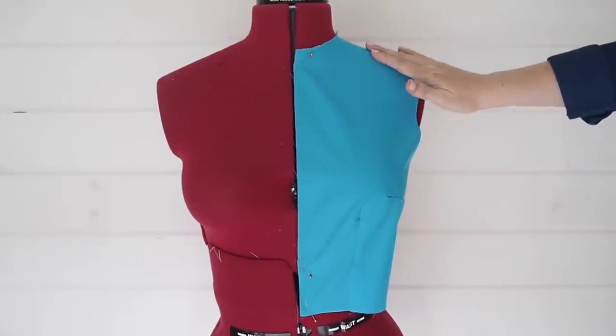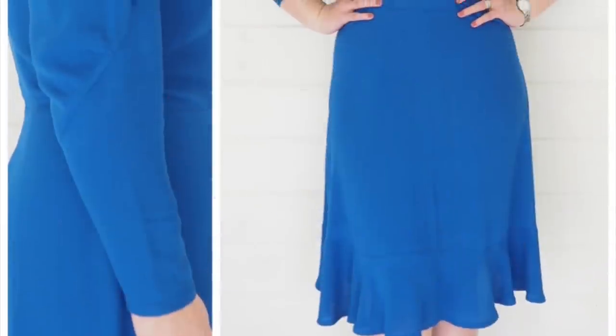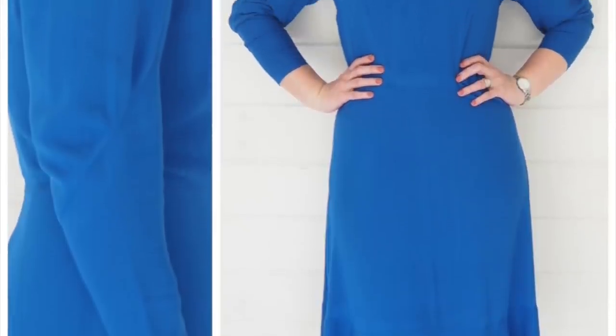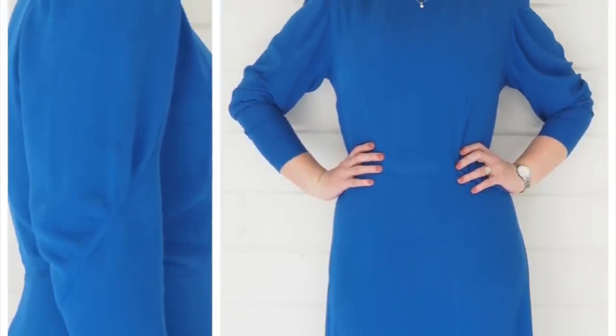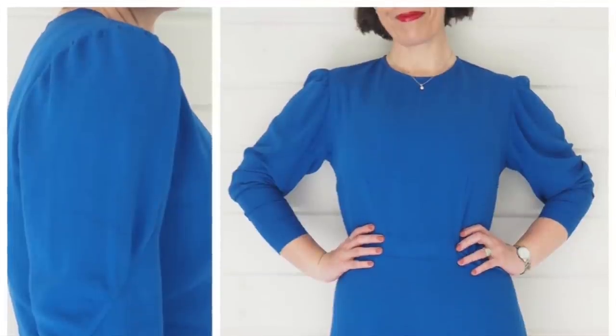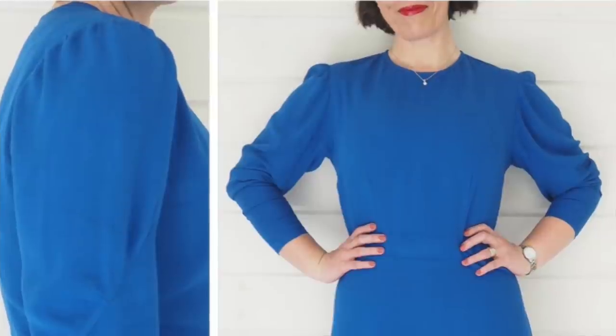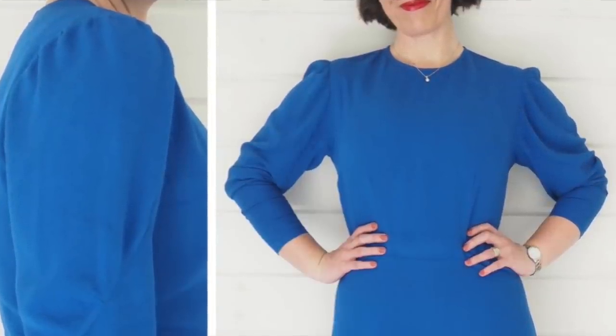They've both been moved slightly away from the apex, giving a lovely flattering shape. And I thought it might be useful to show some examples of real garments that I've made using this dart position. So this first one is a simple shift dress made from the same woven block. It's had the same treatment in terms of repositioning darts.